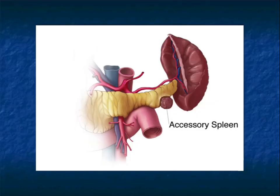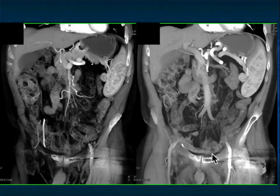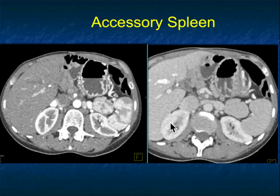Here's a schematic of accessory spleens: in coronal view they are more common on the inferior surface of the spleen, which can help distinguish them from neuroendocrine tumors. One example shows a three centimeter mass near the splenic hilum with a moray pattern on arterial phase that looks identical on venous phase — very classic. Neuroendocrine tumors of the pancreas will also be bright but won't match splenic enhancement on both arterial and venous phases.